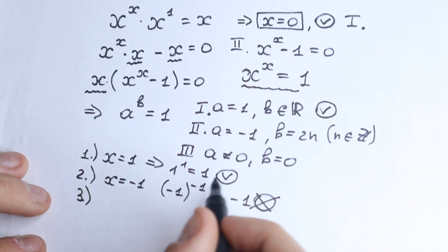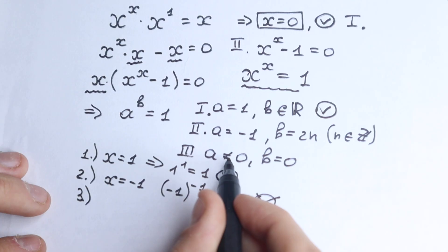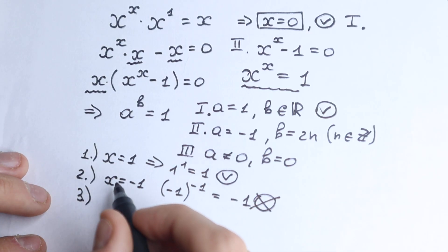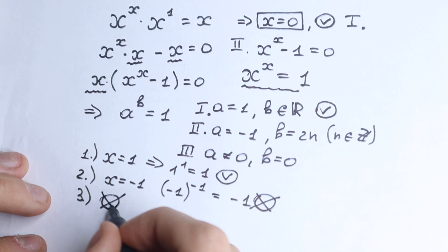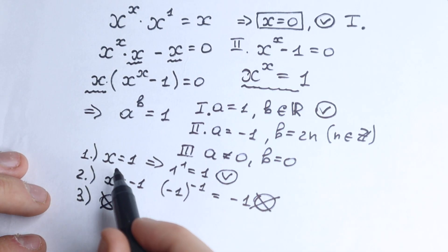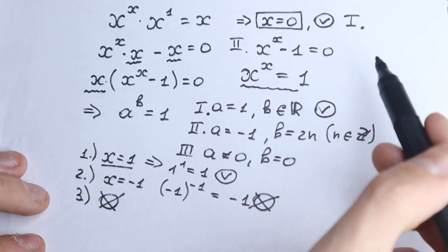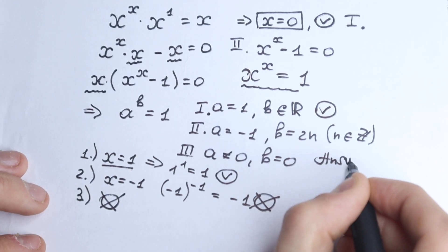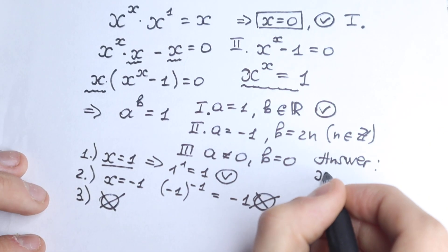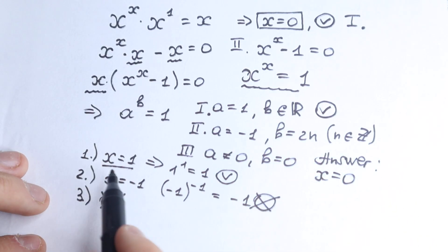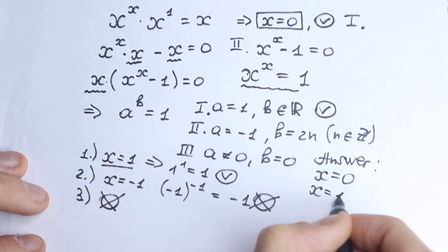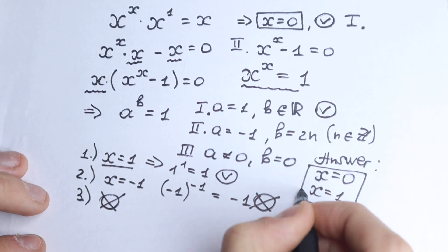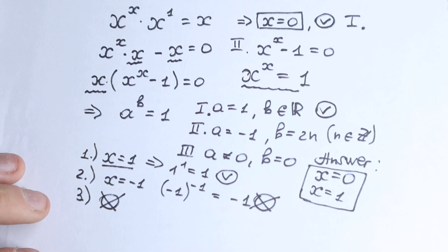The third step: x equals zero. In our case a equals zero, so we don't need this case. As a result we have two roots: x equals zero and x equals one. This is the solution to this question. I hope you understand these thoughts, I wish you all the best, see you in the next video — have a great day!